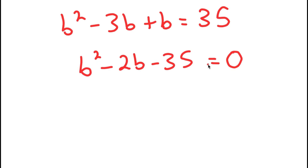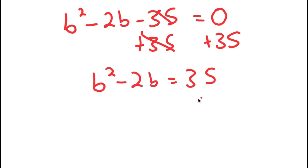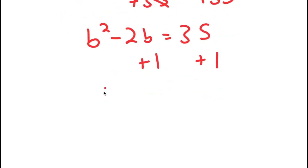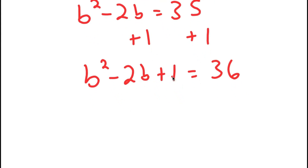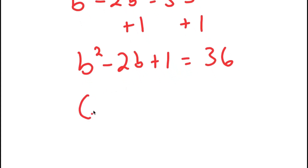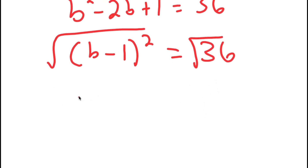Actually, before doing that, what I'm going to do is add one on both sides. So starting from B squared minus two B equals 35, I add one on both sides to get B squared minus two B plus one is equal to 36. The reason I did that is because B squared minus two B plus one is the same thing as (B minus one) squared. Now I can take the square root on both sides because the square root of 36 is a whole number, and I get B minus one is equal to positive or negative six.